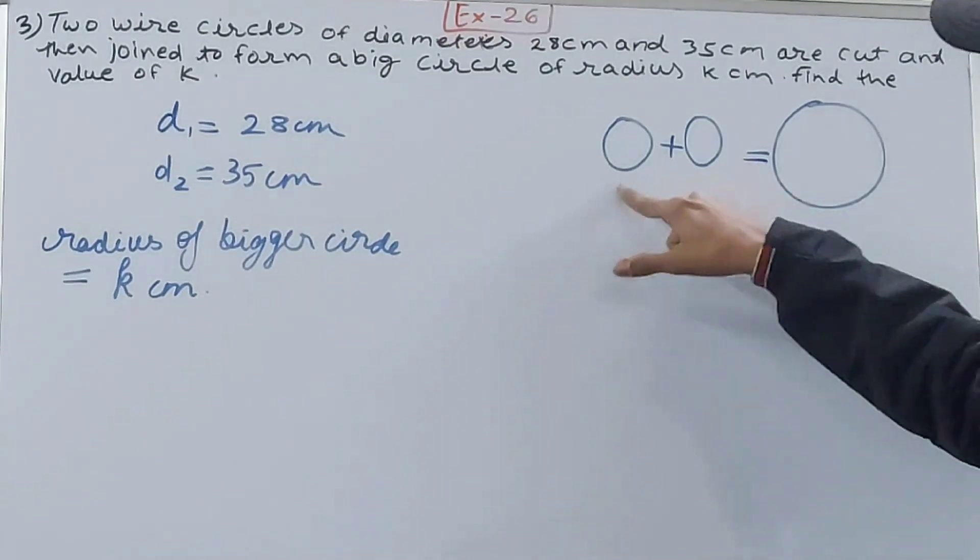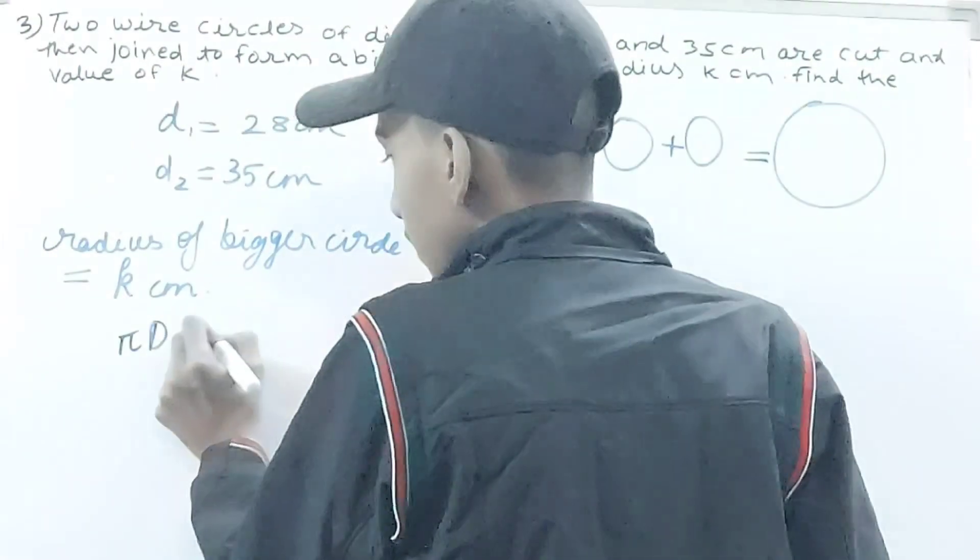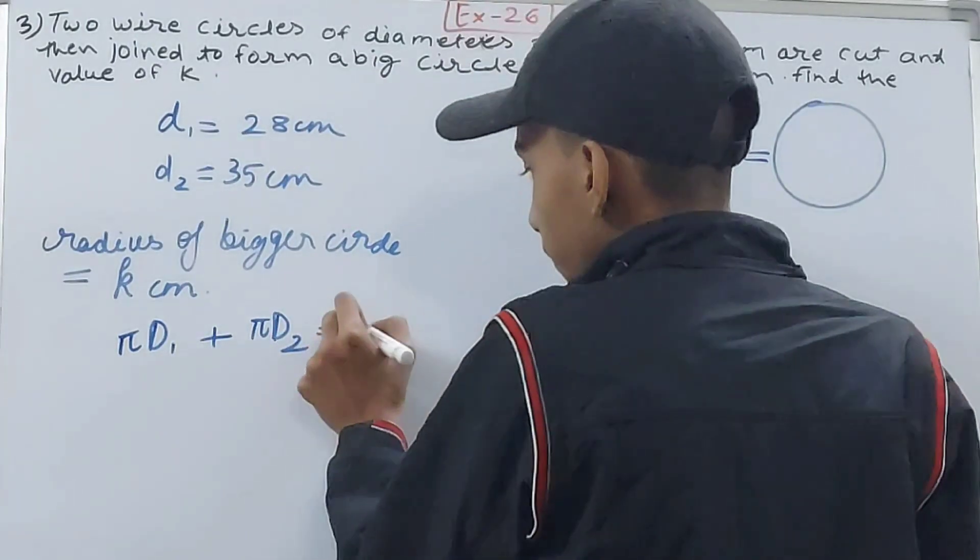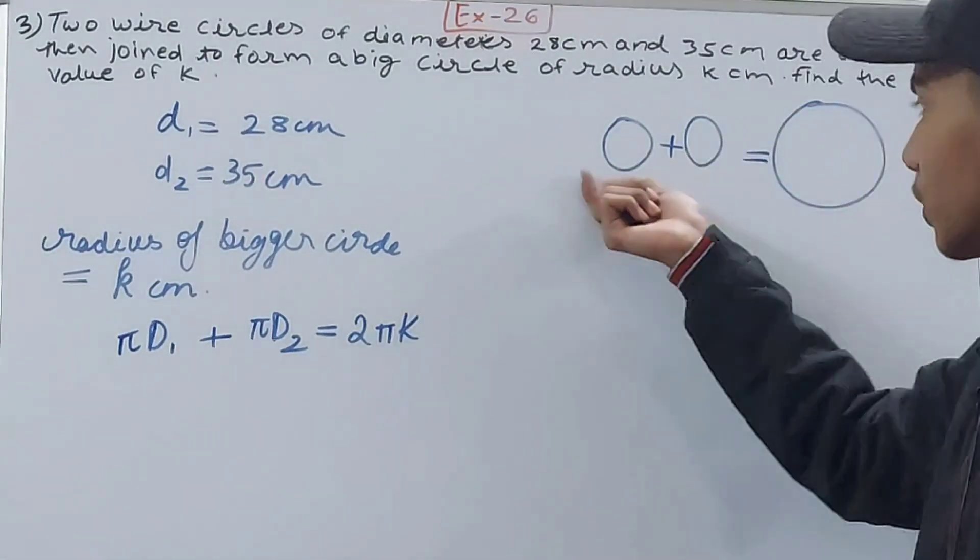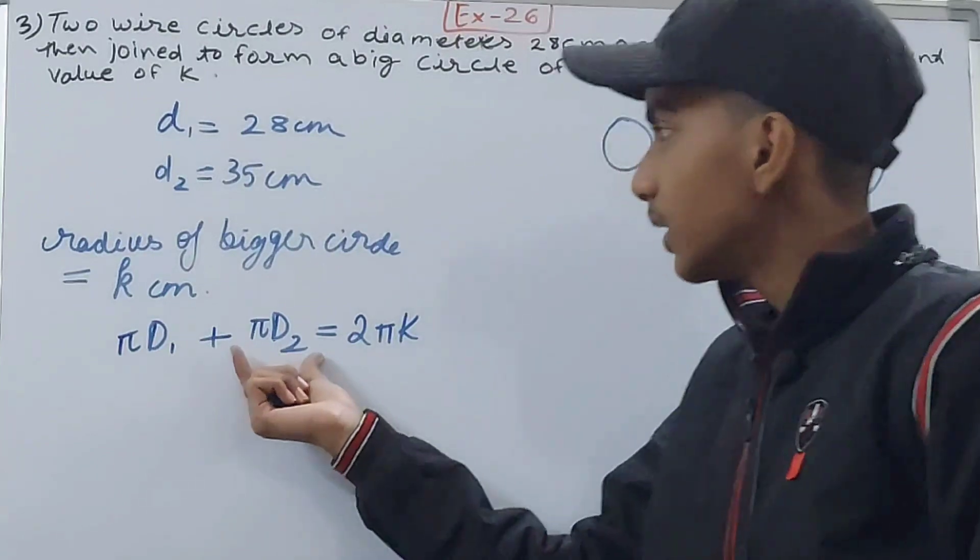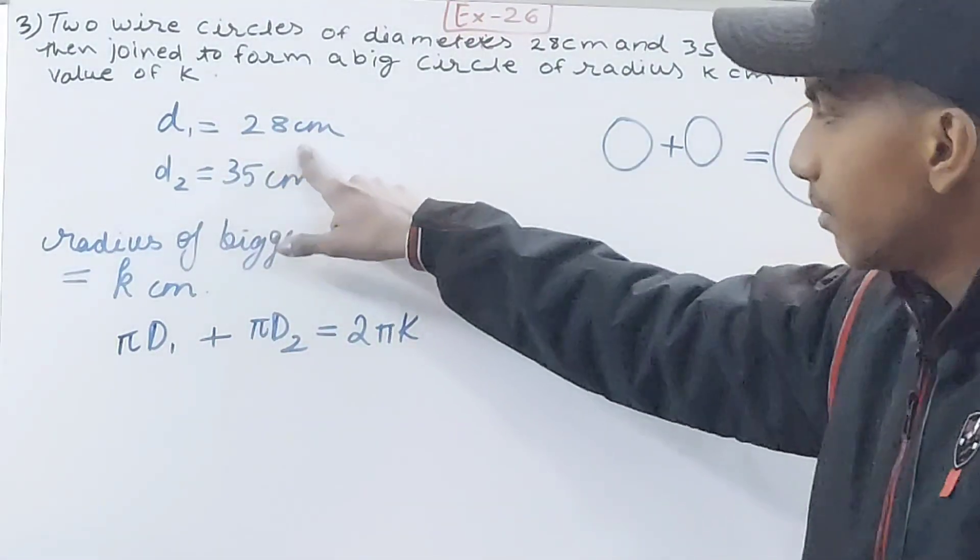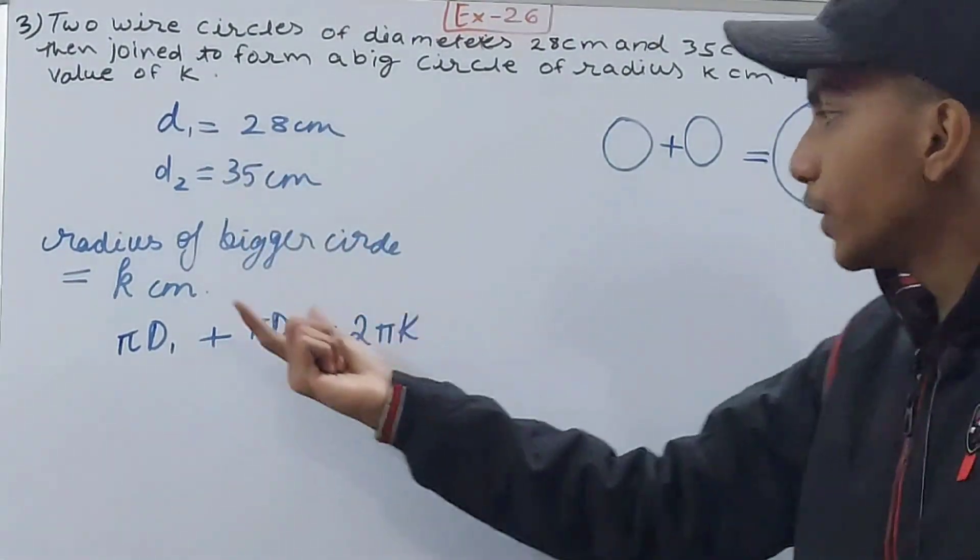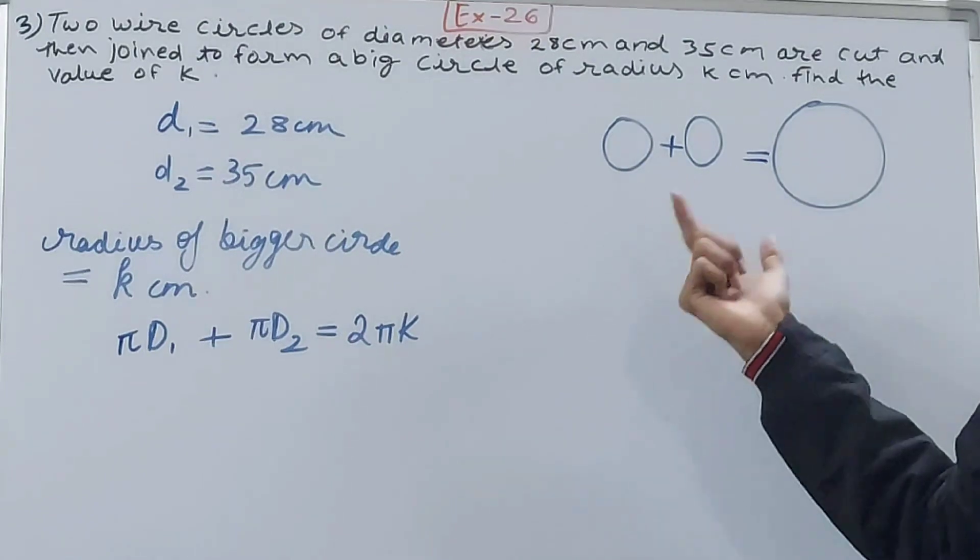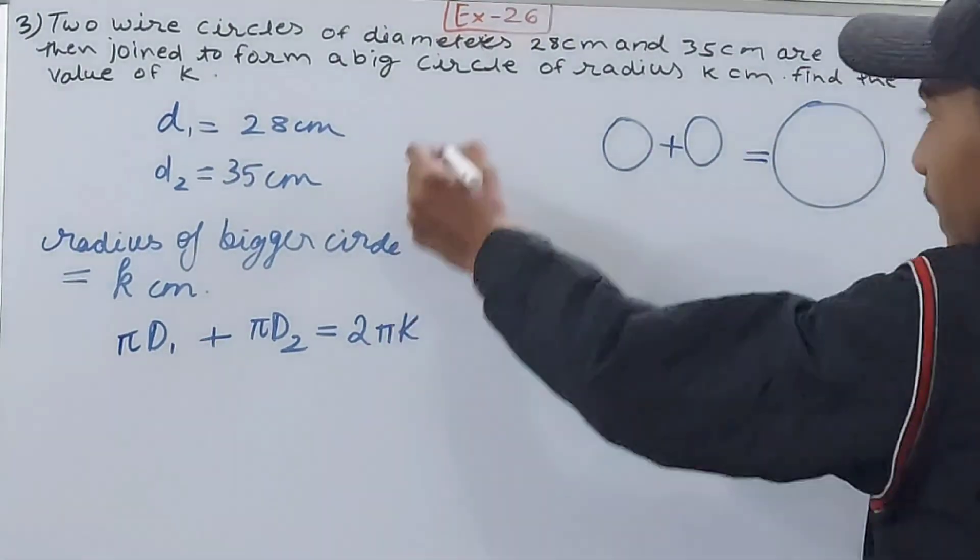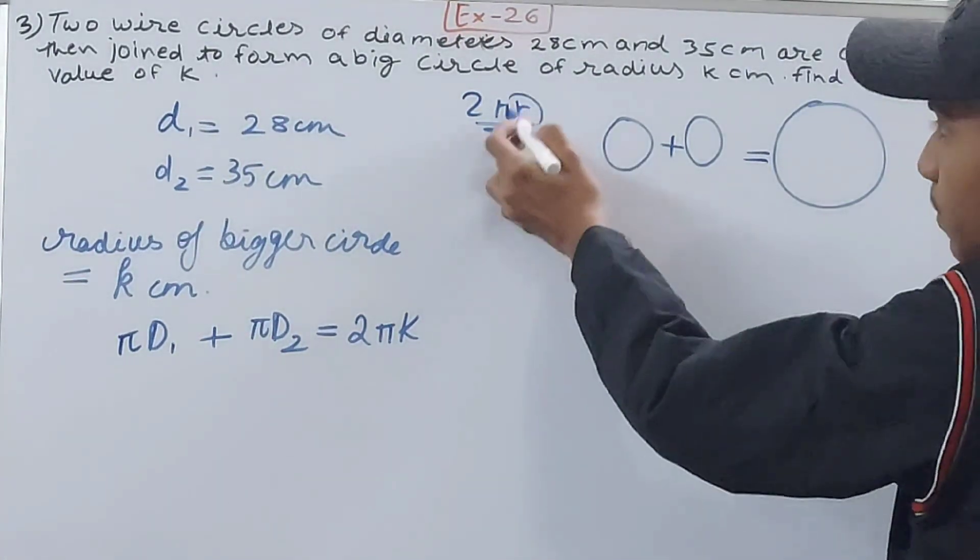The circumference of each of these two circles - we know that the circumference is πd₁ plus πd₂ equals 2πk. How am I writing this? πd₁ is the circumference of this smaller circle, then the circumference of the other smaller circle is πd₂. So in this, diameter 28 will come, in this, diameter 35 will come. Then the circumference of both of these will be added to give us the circumference of this larger circle, which will be 2πk - the radius is k, so I've written k.